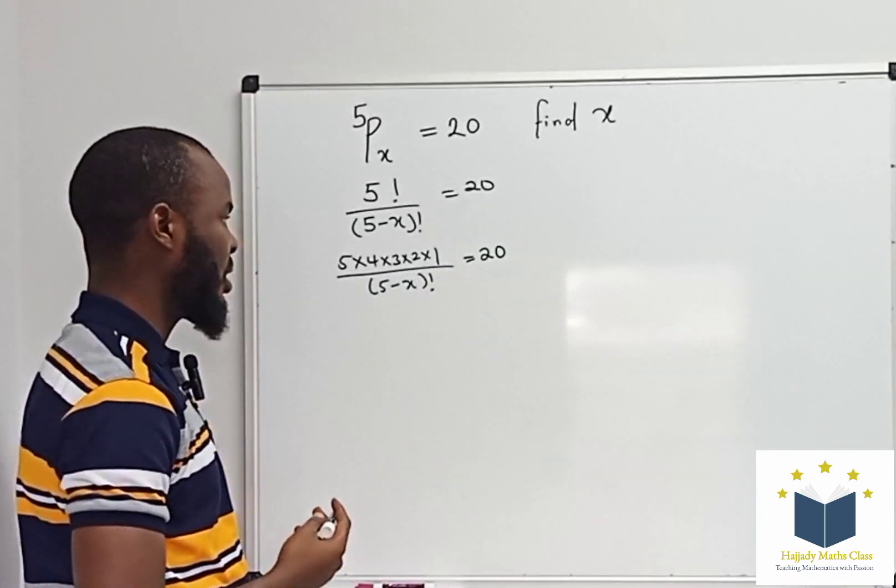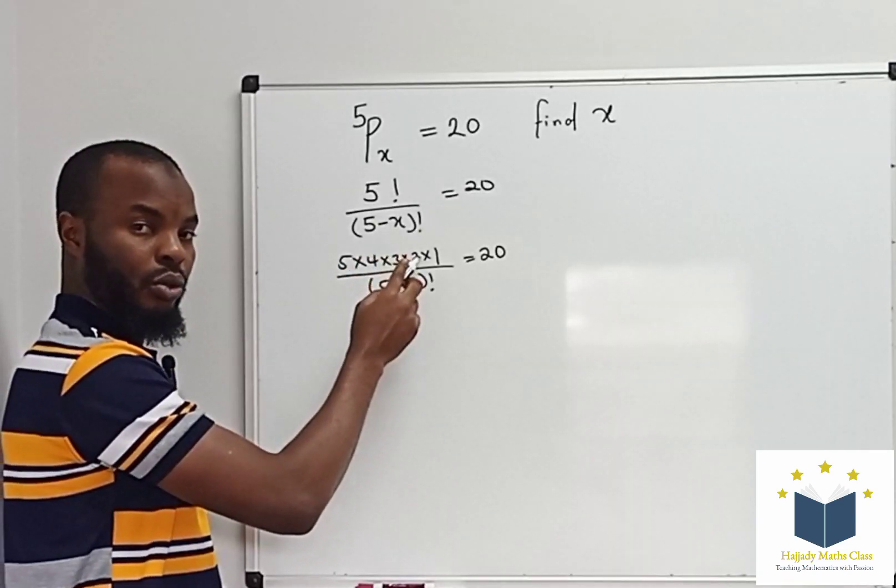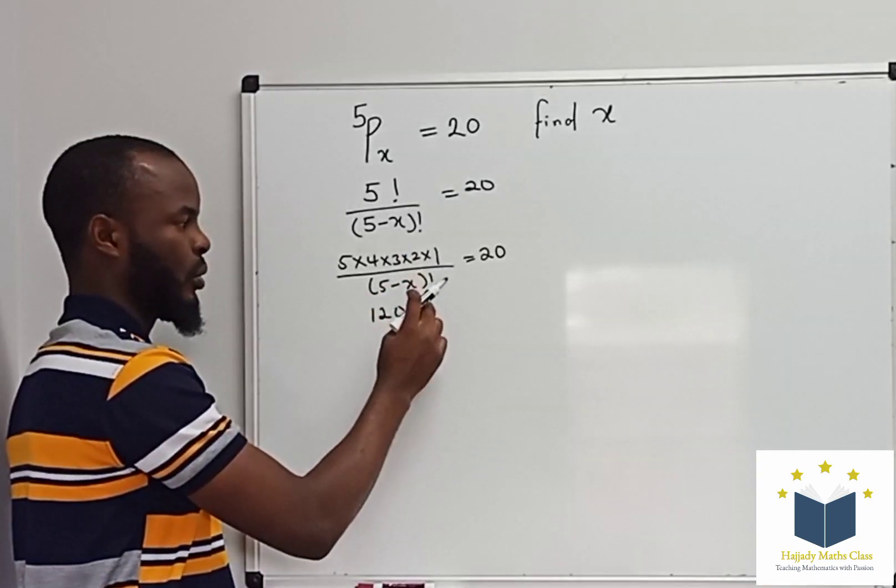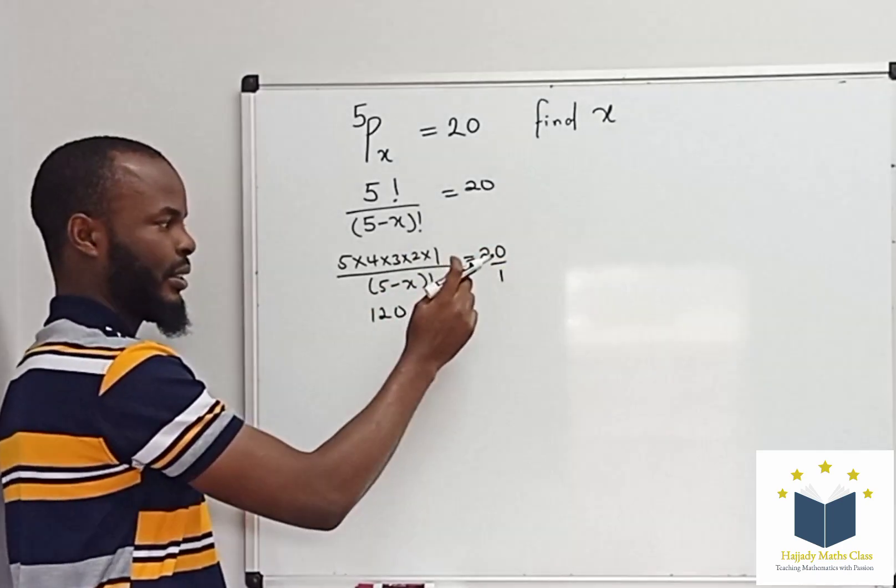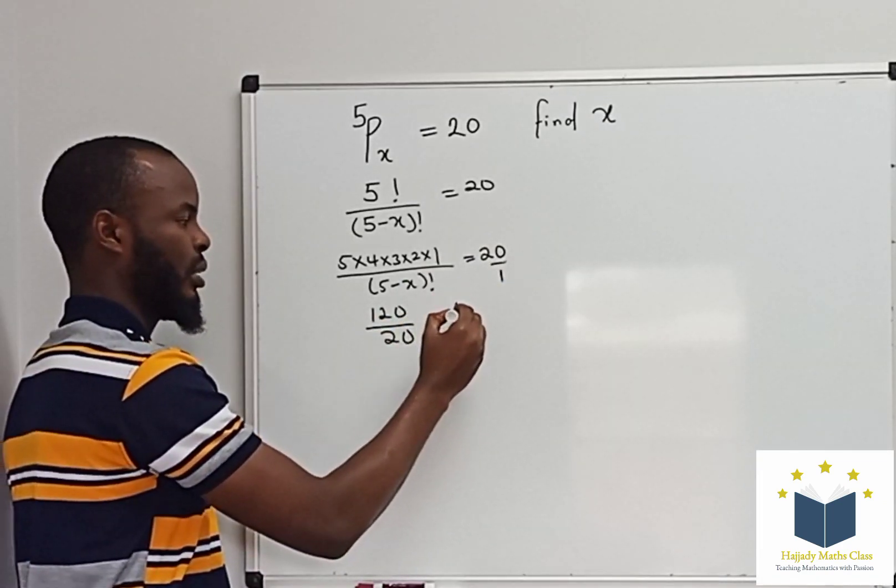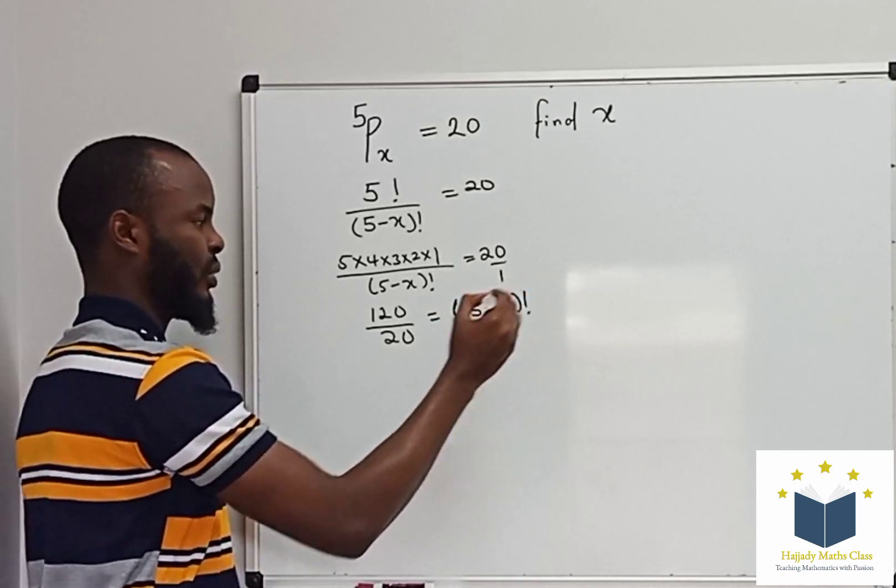Now, let's multiply the numerator. 5 times 4 gives 20, times 3 is 60, times 2, 120 times 1 is still 120. So, we can cross-multiply this. This is going to be 120 over 20 equals 5 minus x factorial.